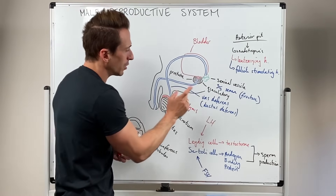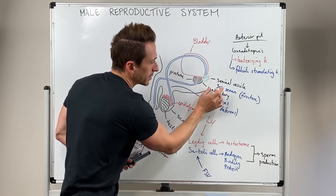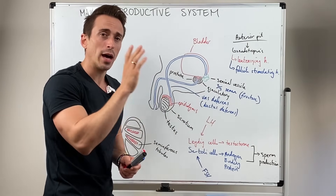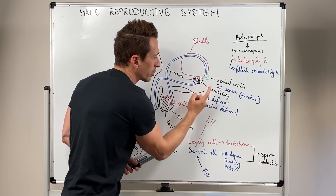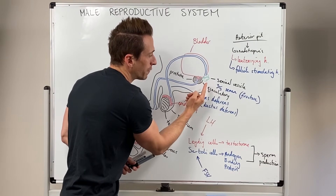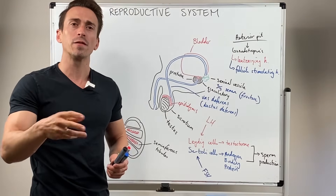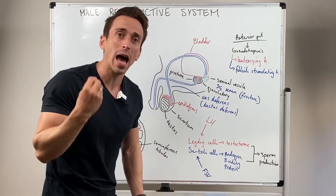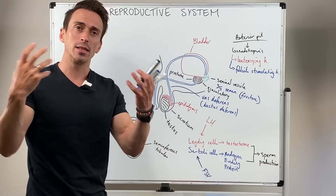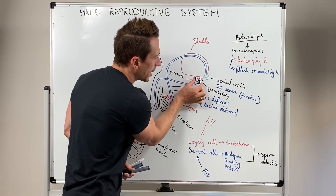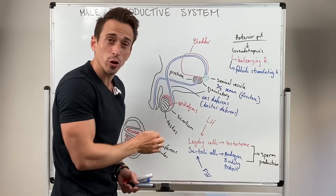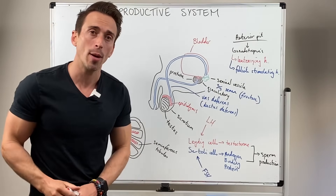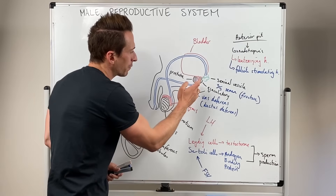The rectum sits right next to the prostate, which is why a digital examination of the prostate can occur — you can feel its size, hardness, and texture to check if it is lumpy or bumpy. As males age, the prostate grows, and as it grows the tissue can squeeze on the urethra, making it very difficult to urinate. This is known as prostatic hyperplasia.